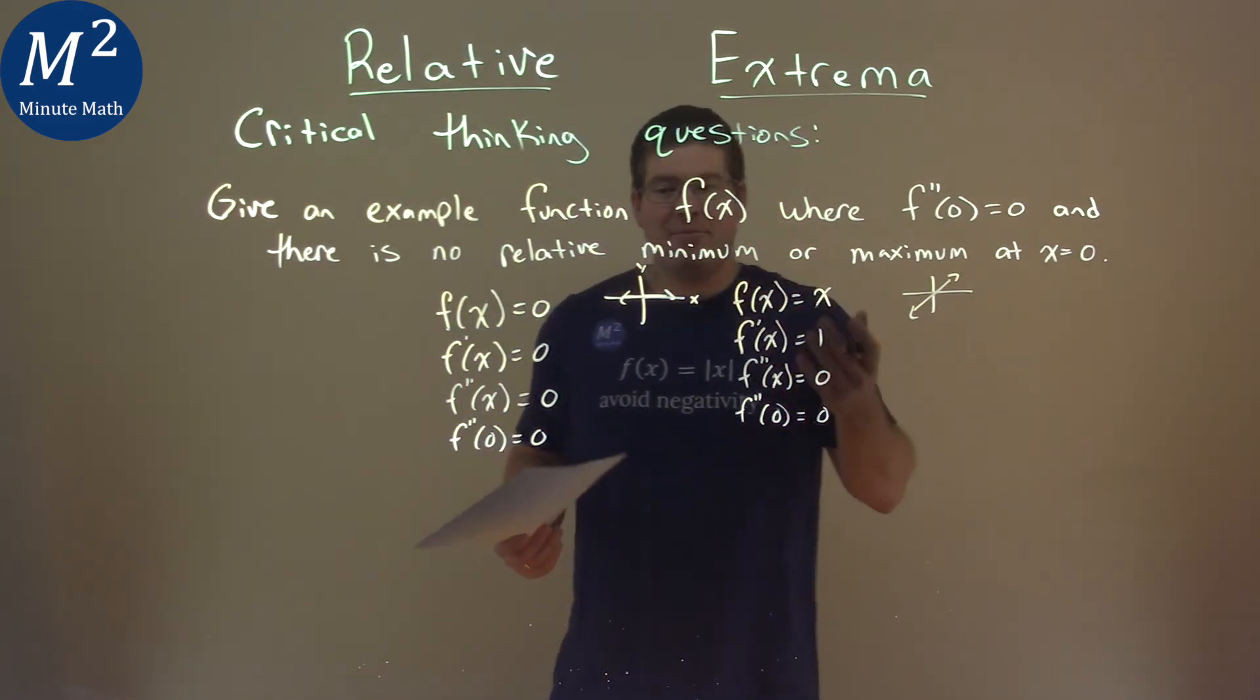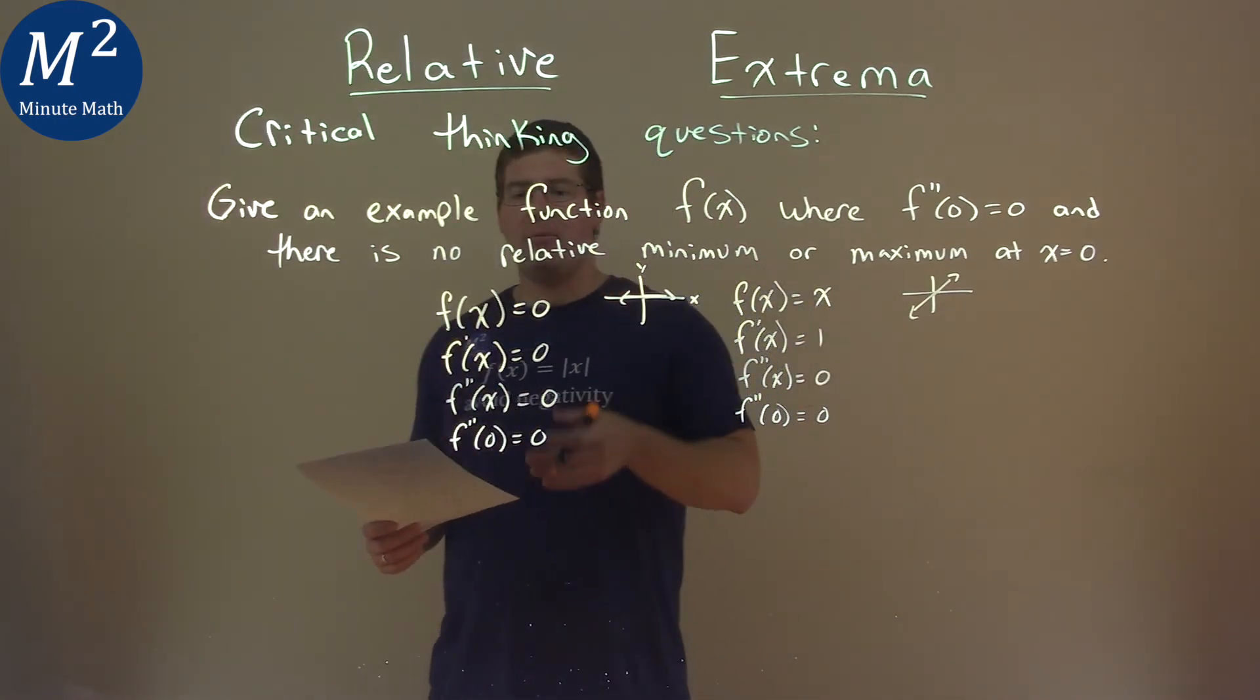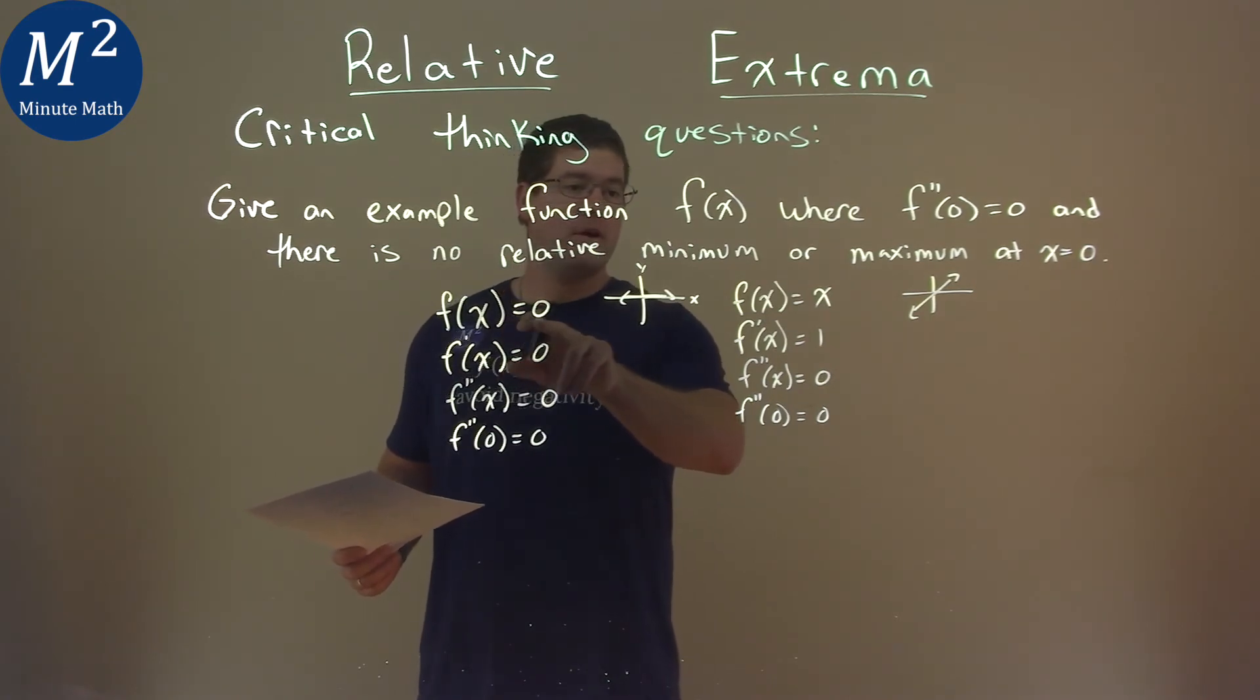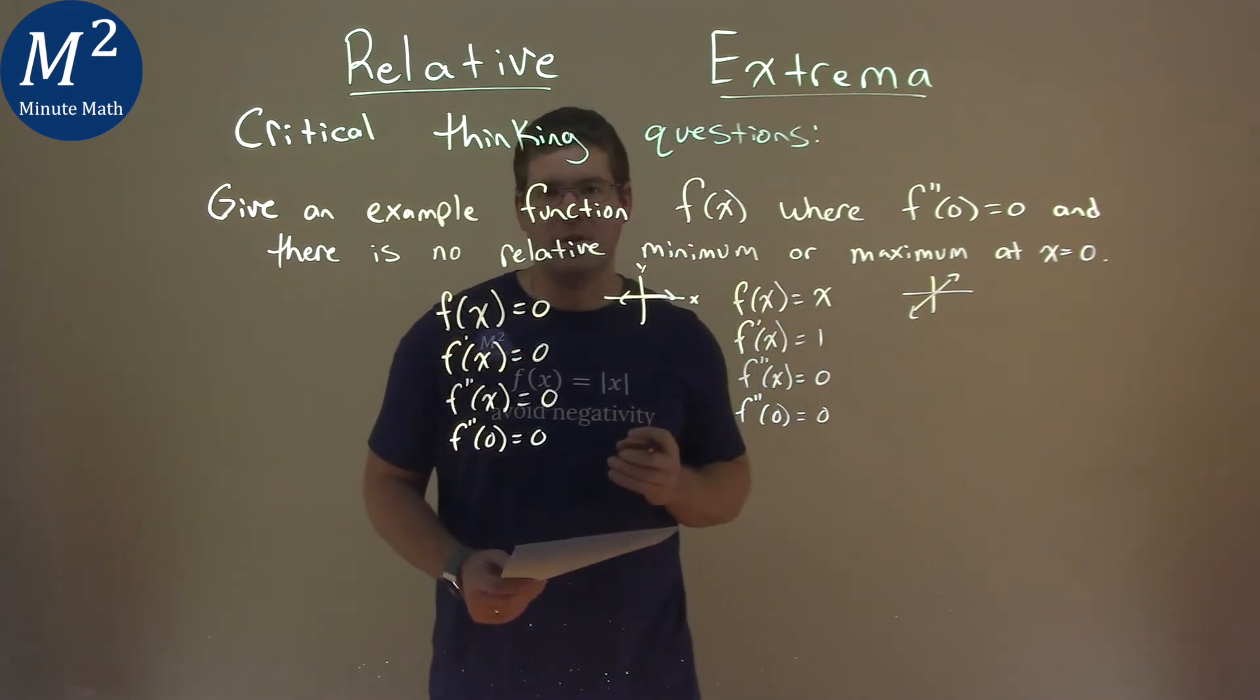And so we have two possible answers here, two functions. We just needed one, but I gave you two. Our f of x equals 0 is one function, and f of x equals x is the second function.